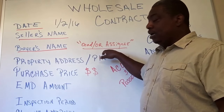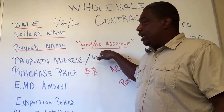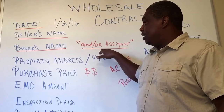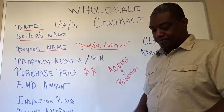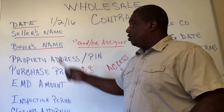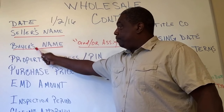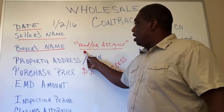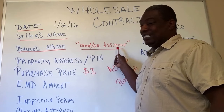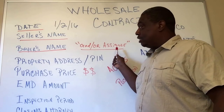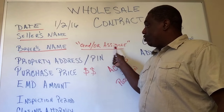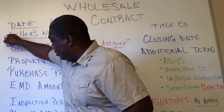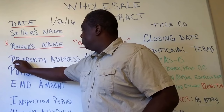You can also put 'and/or assignee' in the additional terms and conditions section — we'll get to that. But make sure you have this on your contract. When you talk to your closing attorney or escrow officer, they will ask if this verbiage is on your contract. In essence, the buyer or someone they've assigned the contract to can purchase the property. 'And/or assignee' — very, very important.